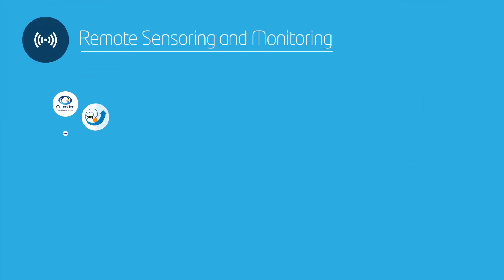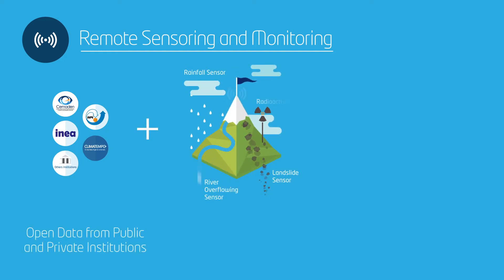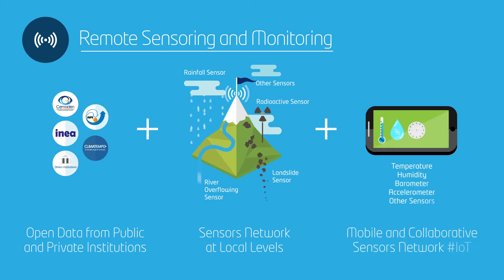FireGuardian gathers monitored information from official institutions, broadens the network of local sensors to define new parameters for event detection, and adds data from mobile and collaborative networks.